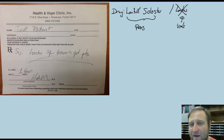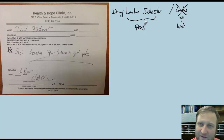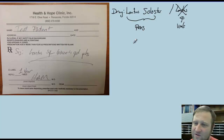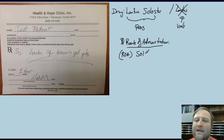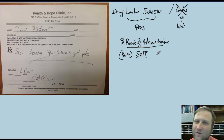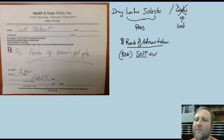Every drug has a vial and pen form, but the pen has a different name. For example, Levemir is Levemir Flexpen, but we can't get Flexpens anymore. Humalog also has a Flexpen form. The route of administration is also important — abbreviated ROA. When pens are used, the ROA will be SOLP, which stands for Solution Pen Injection. For a vial, it's SOLN, which stands for Solution.